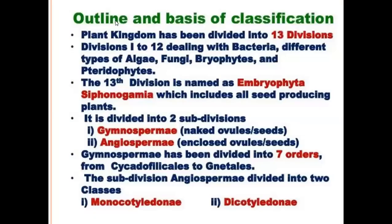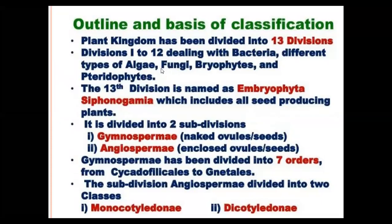Here is the outline and basis of Engler and Prandtl classification. The Plant Kingdom has been divided into 13 divisions. From these 13 divisions, divisions 1 to 12 deal with bacteria, different types of algae, fungi, bryophytes, and pteridophytes.